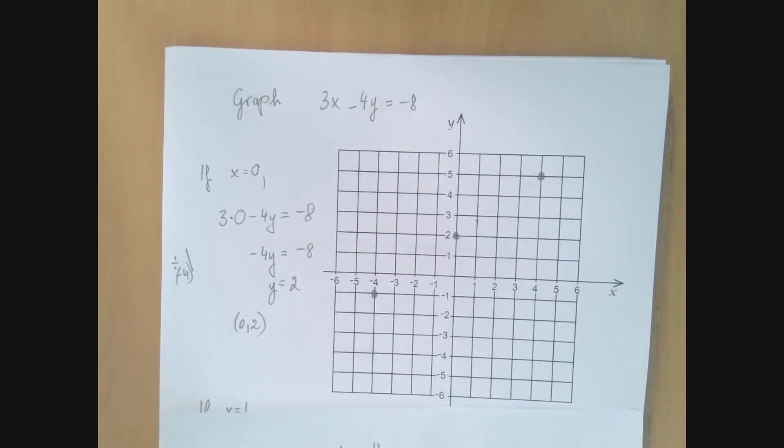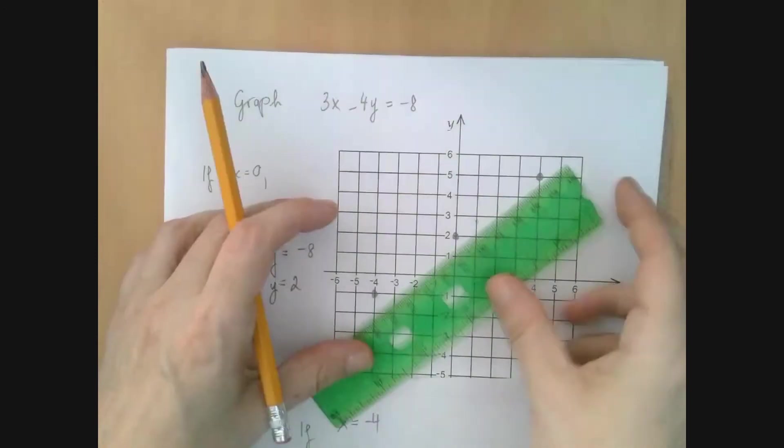So the next useful point would be at x equals negative 8, that's already off the picture. So we got all the lattice points we could. We have found 4 points, that should be enough. So we're just going to put a ruler through these points and connect the dots.